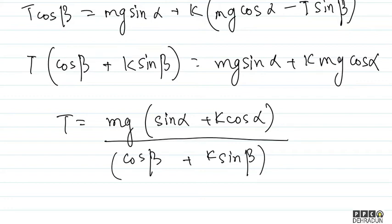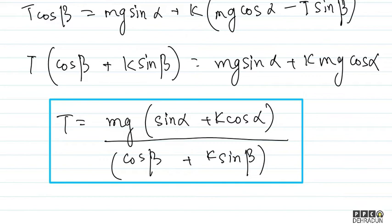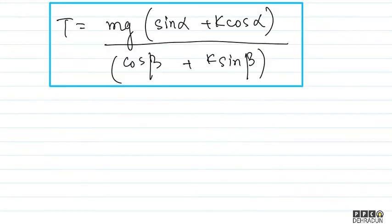From here, tension as a function of beta comes out to be: T = Mg times (sin alpha plus K cos alpha) divided by (cos beta plus K sin beta). I remind you that alpha, Mg, and K are all constants. So tension is purely a function of beta. Now I need to minimize this tension, so one approach is to set dT upon d beta equal to 0.